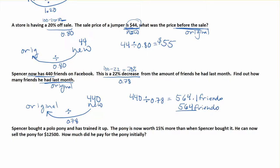Basically we're untwining this equation. If I had the original 564 friends and multiply by 0.78 — because losing 22% means keeping 78% — I get 440. So if you times by 0.78 and got 440, working in reverse with the algebra means dividing by 0.78 to get back to the original amount.